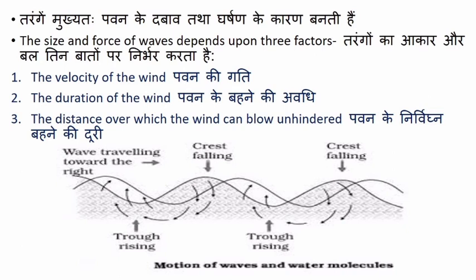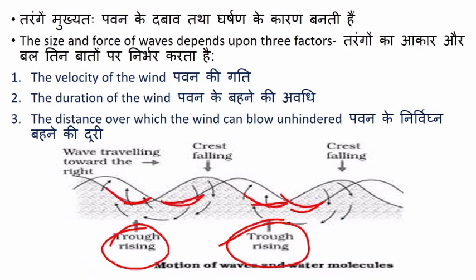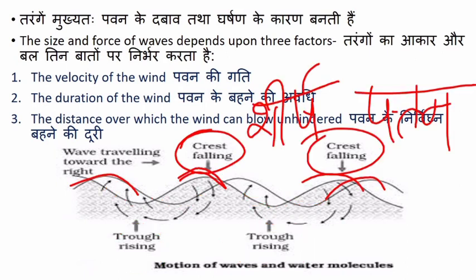Let us try to understand this with the help of a diagram. In the diagram, the bottom part is the trough and the top part is the crest.